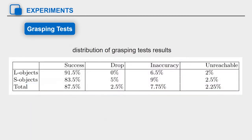The table shows the distribution of the grasping test results. We can see that the overall success rate of the grasping test was achieved at 87.5%, which proves that our methods can effectively help the robot to achieve the grasping test.